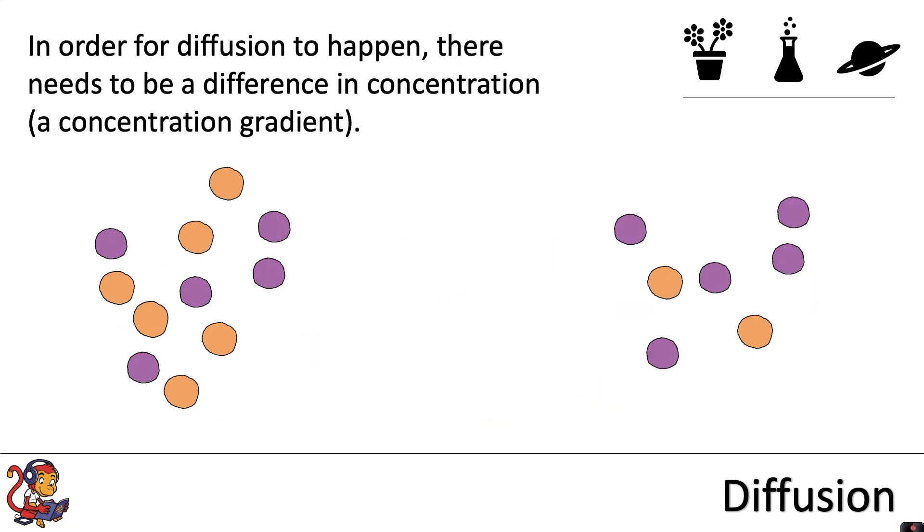In order for diffusion to happen, there needs to be a difference in concentration, which we call a concentration gradient.